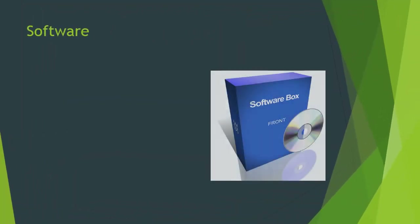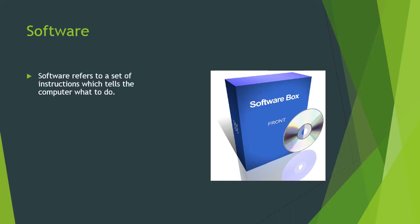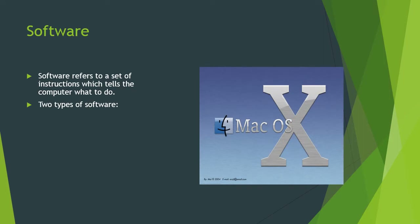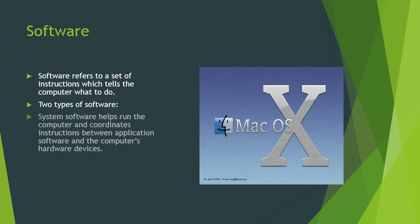What is software? Technically speaking, software refers to a set of instructions that tells the computer what to do. There are two types of software — these instructions are generally called programs. The two types you need to know are system software and application software. System software helps run the computer and coordinates instructions between the application software and the computer's hardware devices.